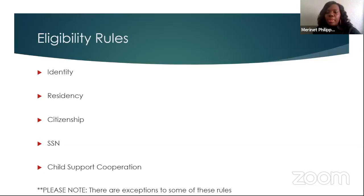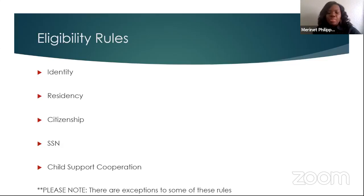In order to be eligible for benefits, you need to be able to prove your identity. You must live in the state of Florida. You must also be a US citizen or a legal permanent resident for at least five years. You must also be able to provide a social security number or proof that you have applied for one. Parents or relatives applying for food assistance benefits for dependent children who have absent parents must cooperate with the state child support enforcement office to establish paternity and obtain child support for that child. Failure to cooperate without good cause can result in removal from food assistance benefits.